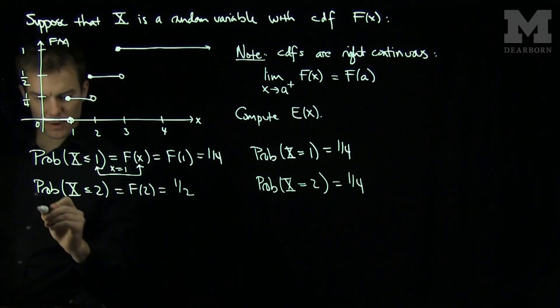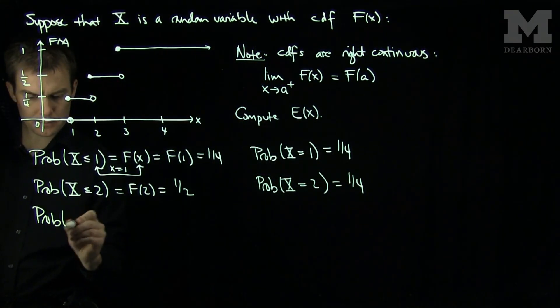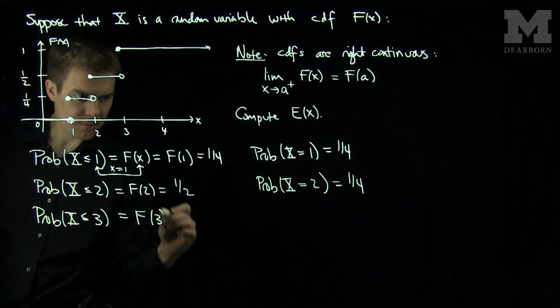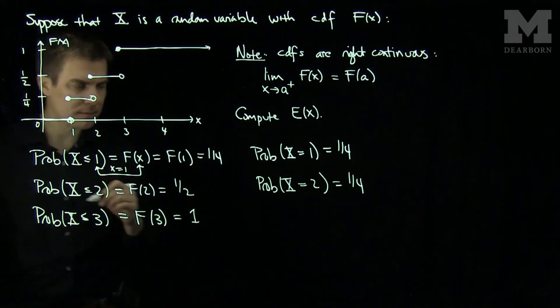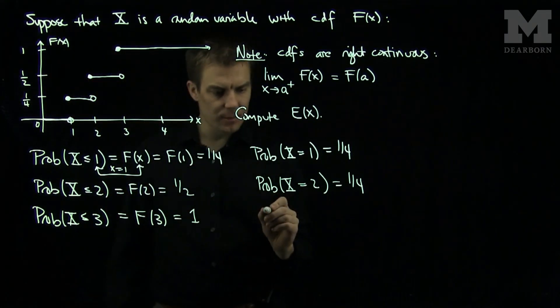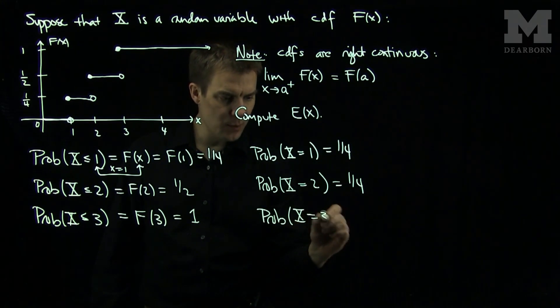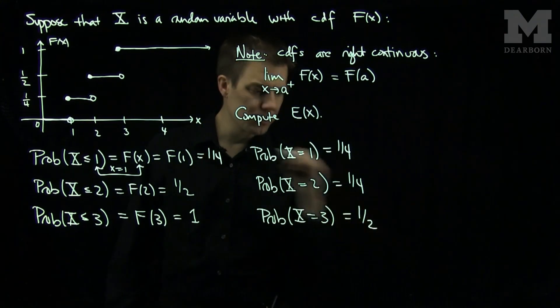And finally, the probability that X is less than or equal to 3 is F(3), and that is 1. And this tells us that the probability that X is equal to 3 is equal to 1/4.